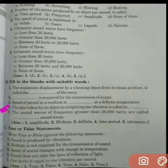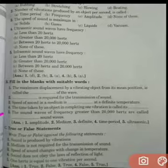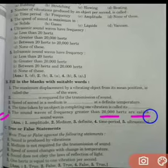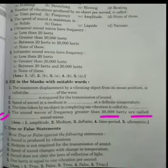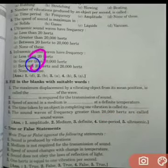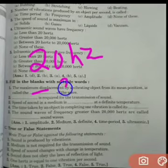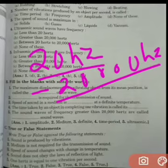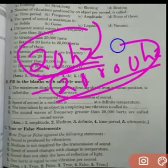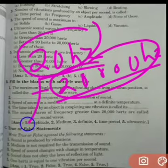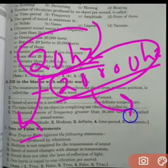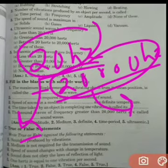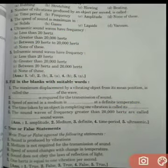Question number fifth is: the sound waves of frequency greater than 20,000 hertz are called. Earlier I told you audible range is between 20 hertz to 20,000 hertz. Below 20 hertz vibrations we call infrasonic waves, and above 20,000 hertz vibrations we call ultrasonic waves. So here the answer will be ultrasonic waves.